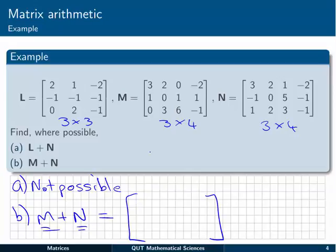Each element is given by adding the corresponding entries from M and N. So the first one is going to be three plus three, or just six. Then moving along, we have two plus two gives us four. Zero plus one is one. And minus two plus minus two, carefully, is minus four. So on down the line. We're going to get zero, zero, six, zero, one, five, nine, and minus two.